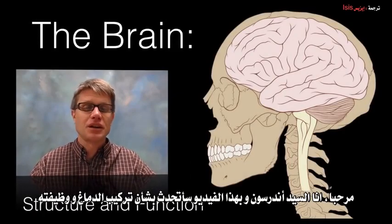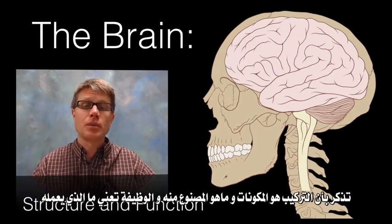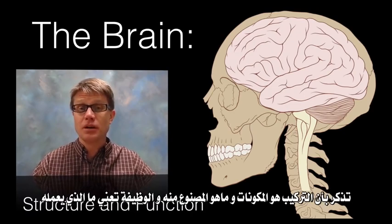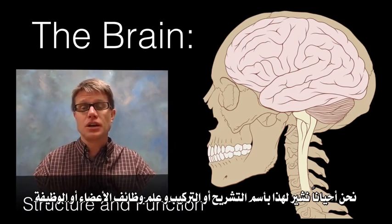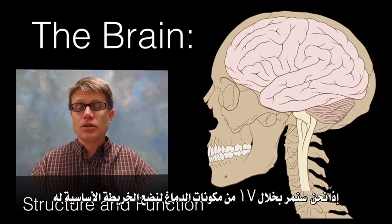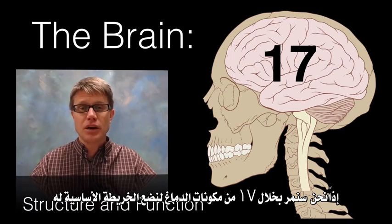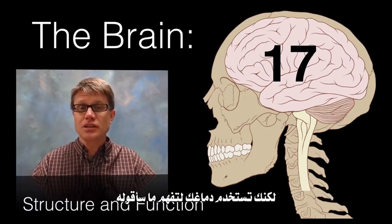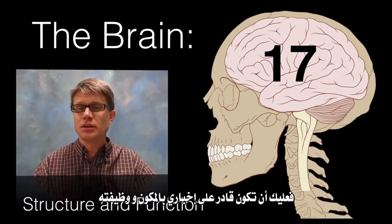Hi, it's Mr. Andersen and in this video I'm going to talk about the brain — structure and function. Remember structure is what it's made up of, and function is what it does. We sometimes refer to this as anatomy or structure, and physiology or function. We're going to go through 17 different structures in the brain. If you do a good job, by the end you should be able to tell me each structure and its function.